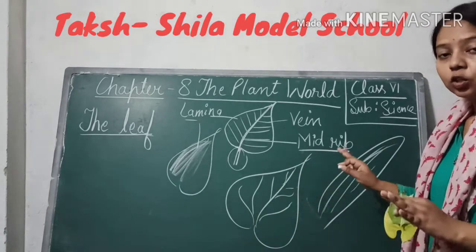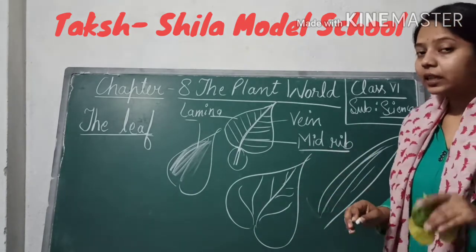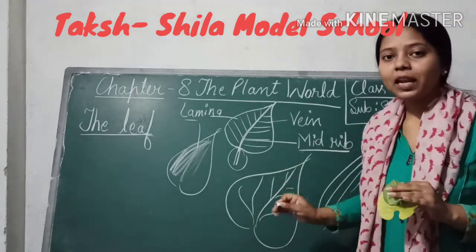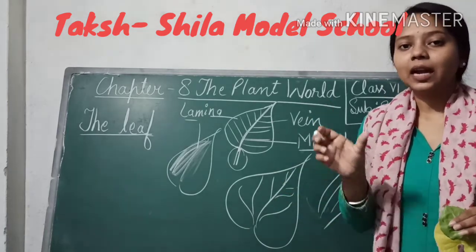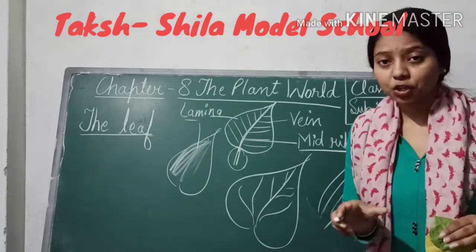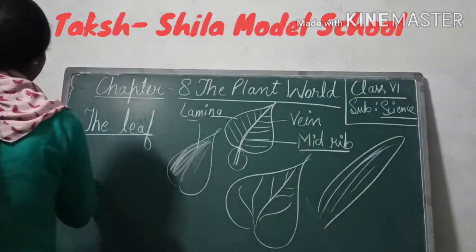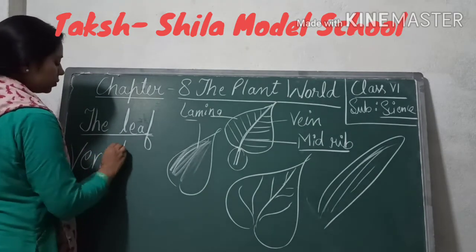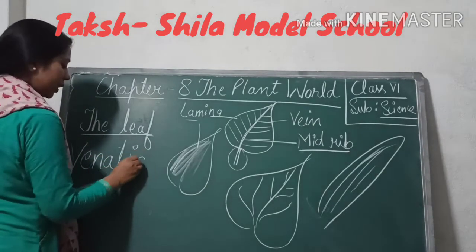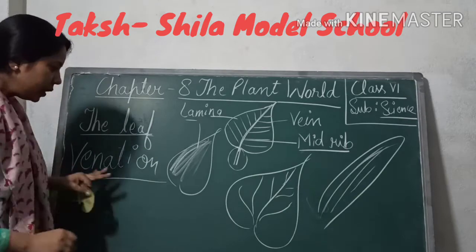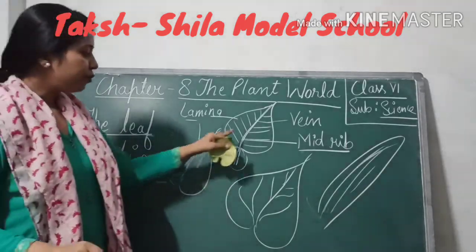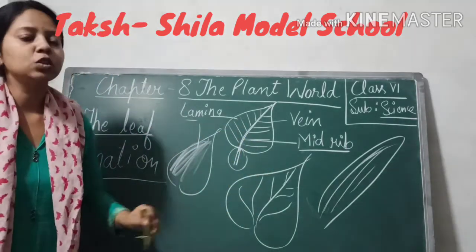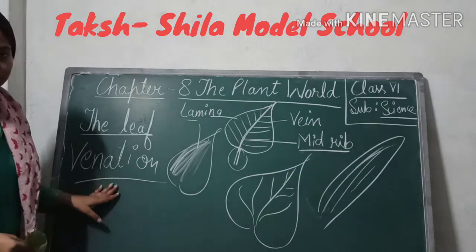This is the arrangement of veins. So basically, the name given to this arrangement is venation. What is venation? The arrangement of veins on the surface of a leaf is known as venation.